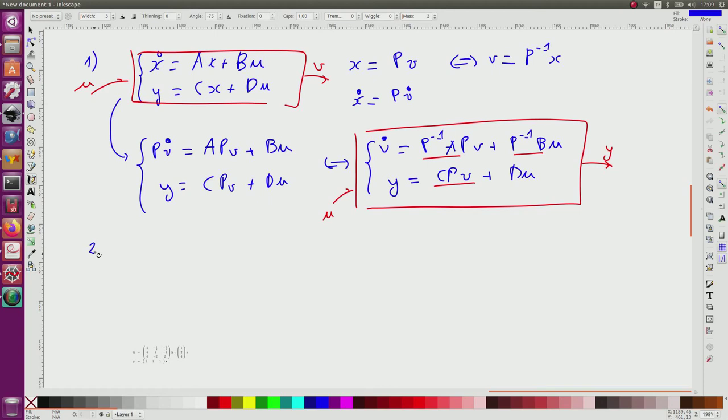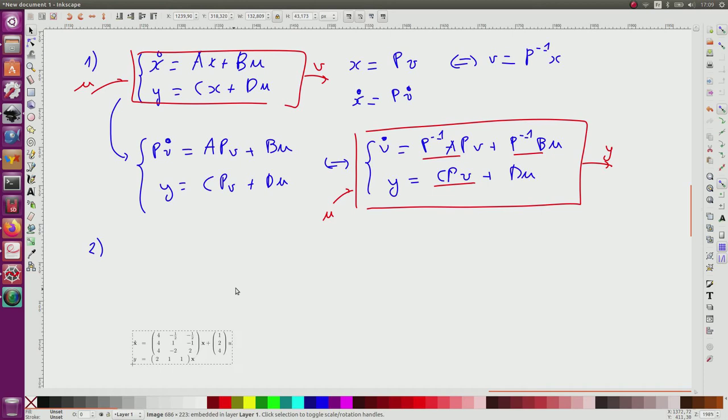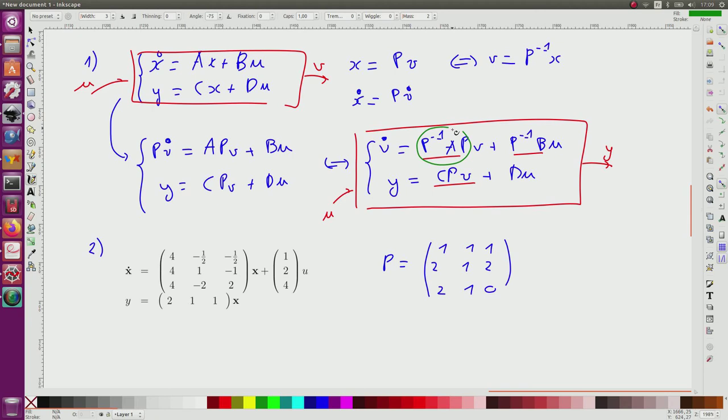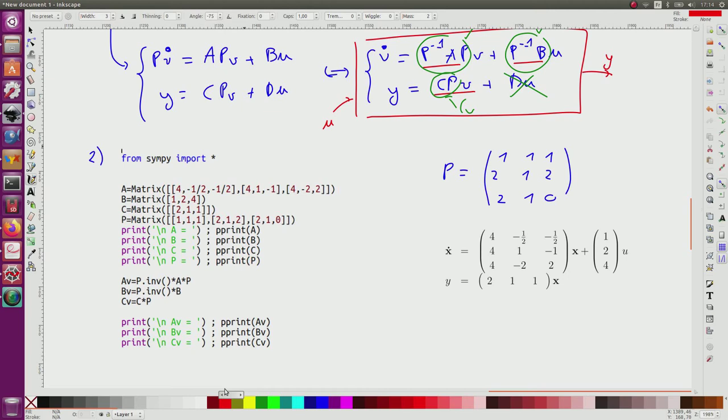So for the second question, I have this system and I take for P this matrix: 1, 1, 1; 1, 2, 1; 2, 2, 1, 0. So now I will have to do this computation to compute the new matrices. So I will call it for instance Av, because it is in the V basis. This one will be Bv, and this one will be Cv. D remains the same, and in this system there is no D, so D is equal to zero. For the computation of the matrices with the V basis, I will use SIMP.